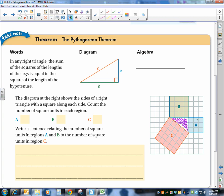So they want us to find out how many square units are in each region. So in region A, we have 3 by 3, which is 9 square units. And B, we have 4 by 4, which would be 16. And then in region C, we have 5 by 5. And that, of course, is 25.